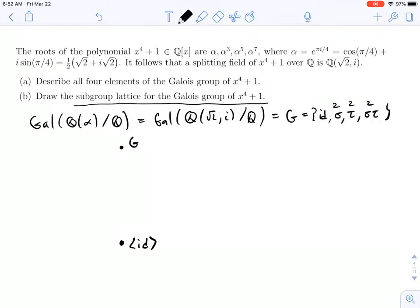Now, each one of these elements generates a subgroup of order 2. So we'll put over here the subgroup generated by sigma, over here we'll put the subgroup generated by tau, and in the middle, we'll put the subgroup generated by sigma tau.